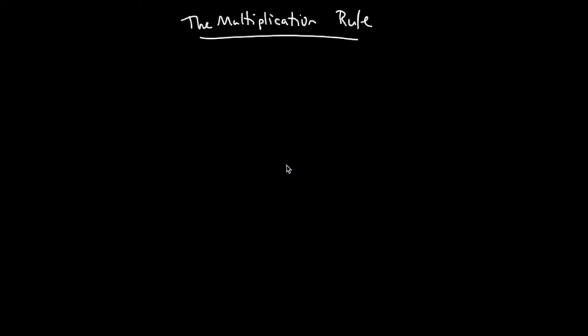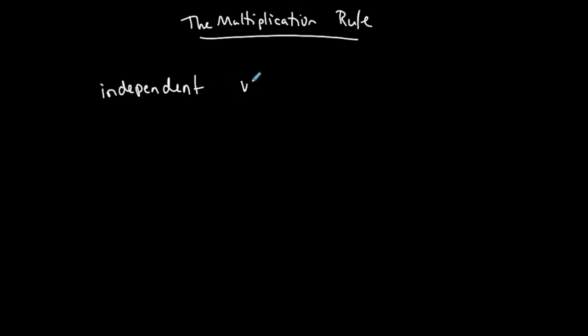This is a video regarding some probability examples using the multiplication rule. These examples are pretty quick and easy in general. The two things that you want to think about before you do your calculations is whether or not your events are independent or dependent.